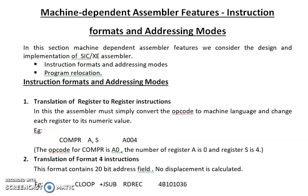Hello everyone, welcome to system software lectures. In today's video we are going to discuss about machine dependent assembler features. There are mainly two features under this topic: instruction formats and addressing modes, and program relocation. I am going to discuss about instruction formats and addressing modes in this video, and program relocation will be explained in the next video.